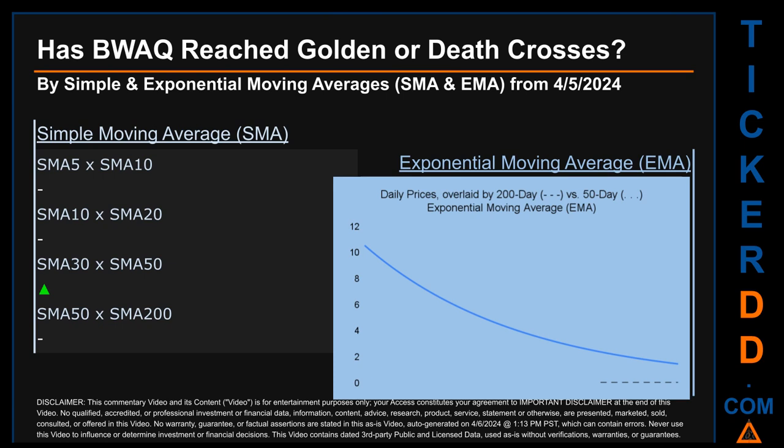If no crossing can be seen, then no signal could be had. The blue line is daily end-of-day prices. Continuing with SMA, we looked across the 5-to-10, the 10-to-20, and the 30-to-50 day ranges to see if golden and death crosses had been reached. We found a golden cross signal for the 30-to-50. We could not find either a golden cross or death cross signal for the 5-to-10, the 10-to-20, or the 50-to-200.